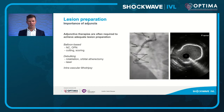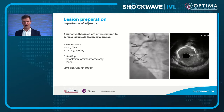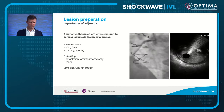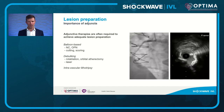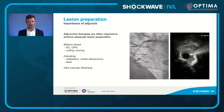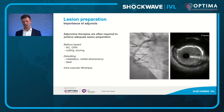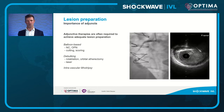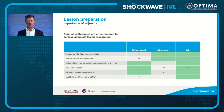Intravascular imaging also allows us to decide what other adjuncts are needed to optimally treat these lesions — balloon-based non-compliant, OPN, cutting balloons, debulking with rotablation or orbital atherectomy, or intravascular lithotripsy. A great example is the napkin ring calcification commonly seen in heavily diseased aorto-osteal lesions. All these adjuncts have advantages and disadvantages, and it's worth understanding which is best for the type of lesion you're treating.